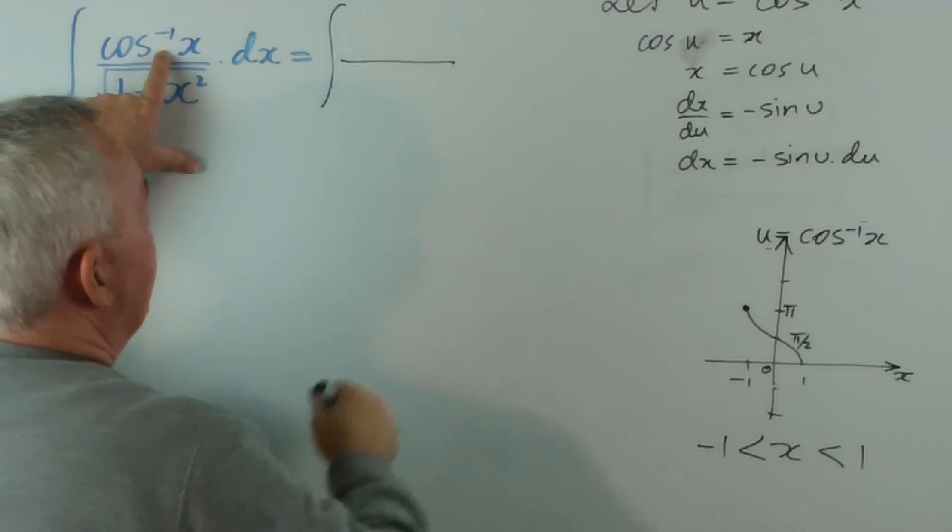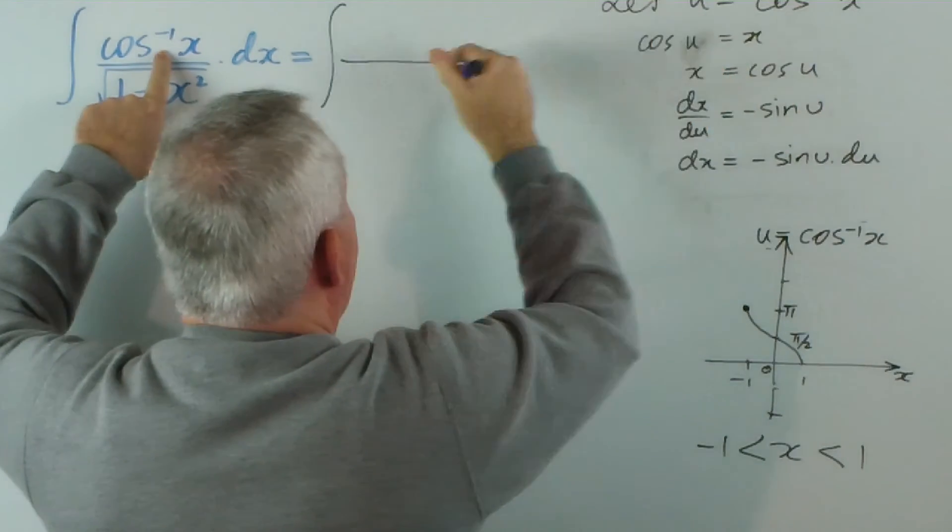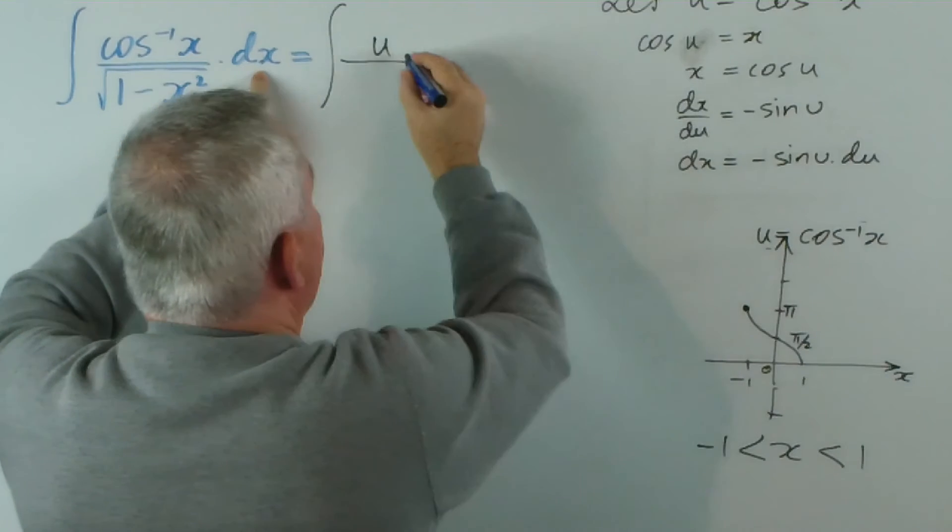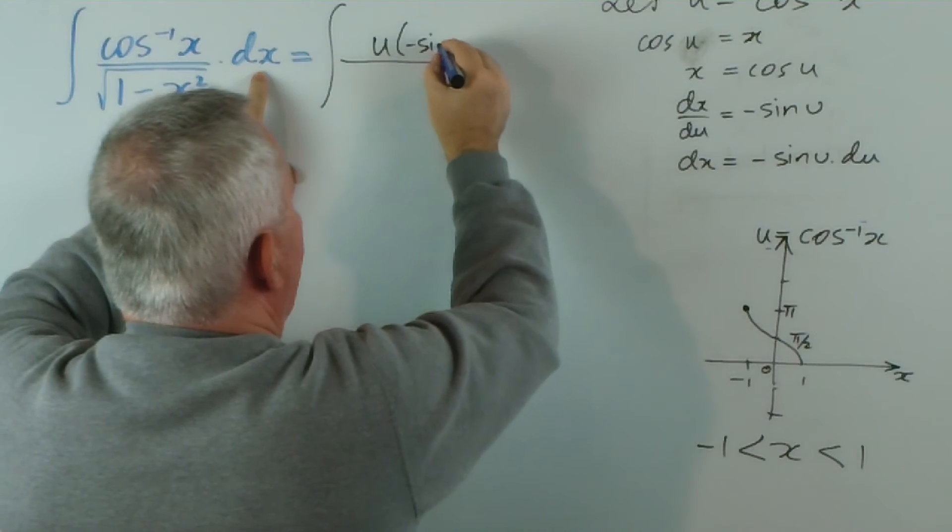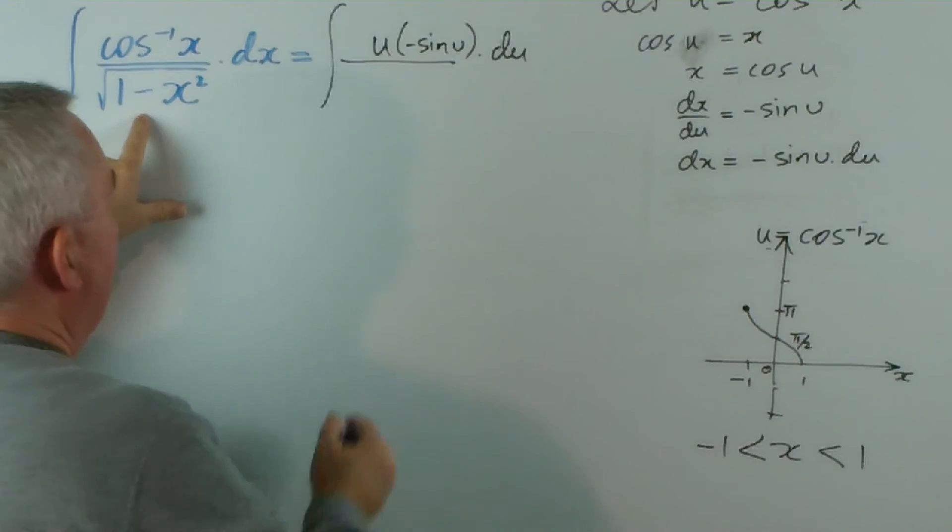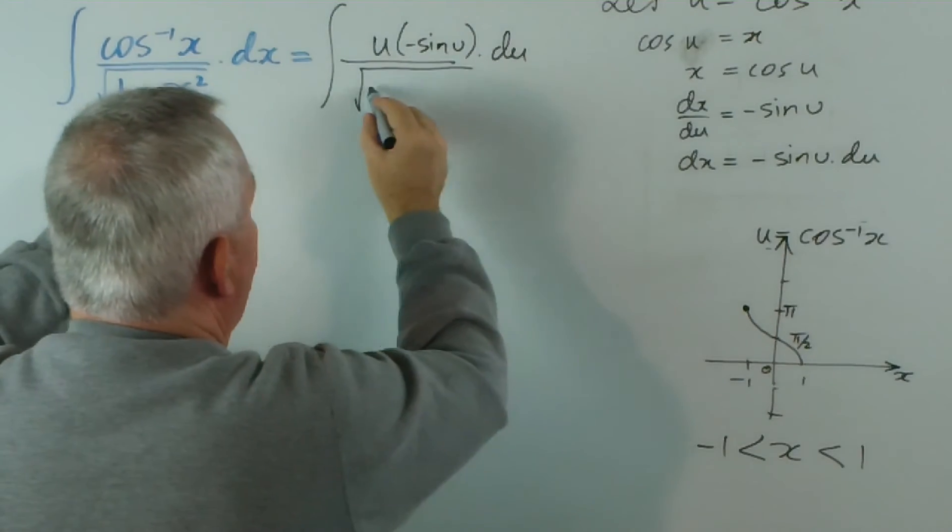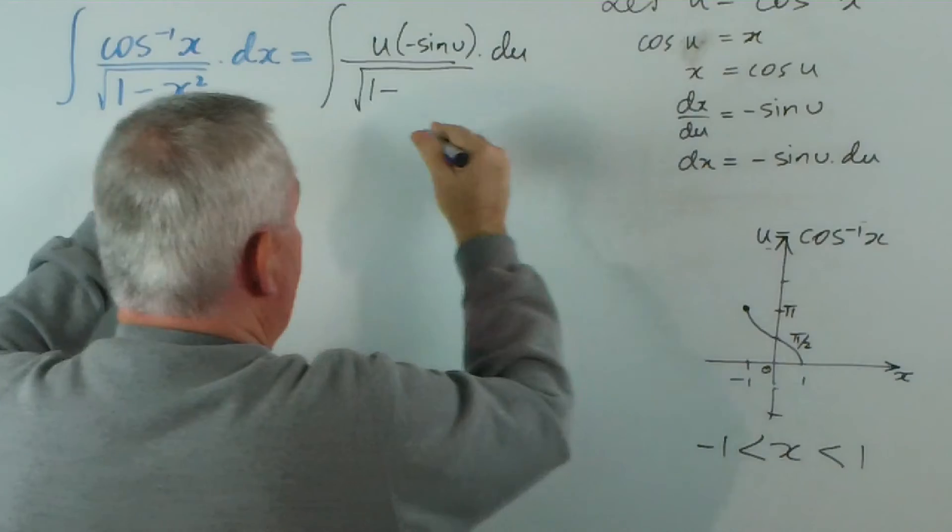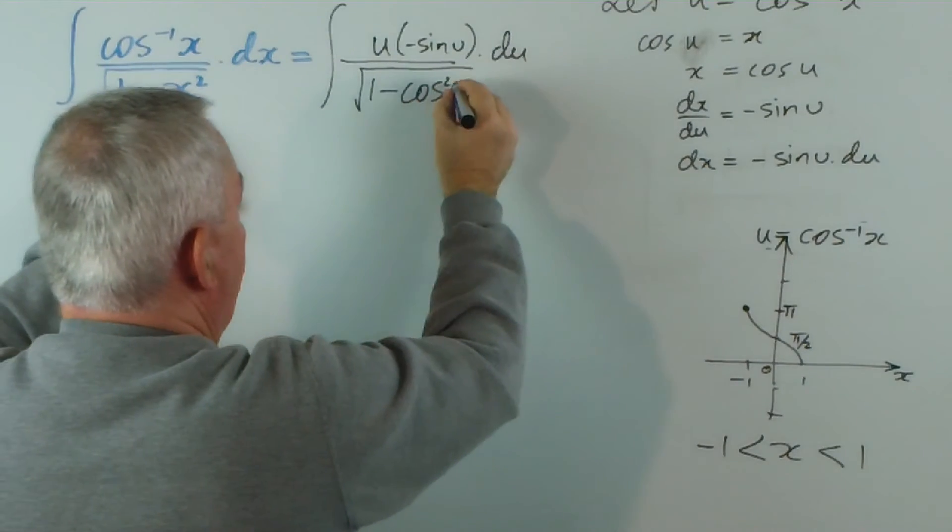The inverse cosine of x, we replace with u. The dx we replace with negative sine u times du. In the denominator we have 1 minus x squared, which is going to be cos squared u.